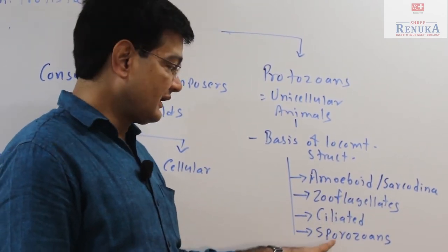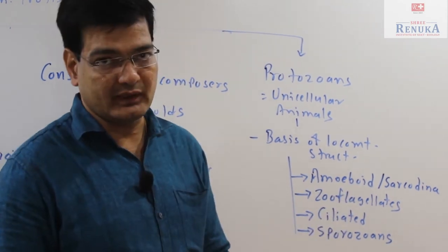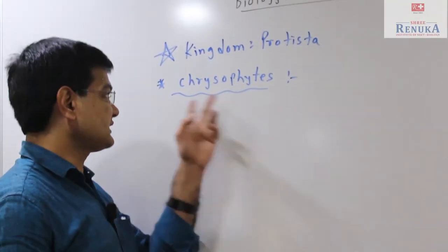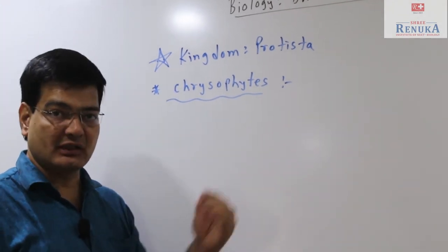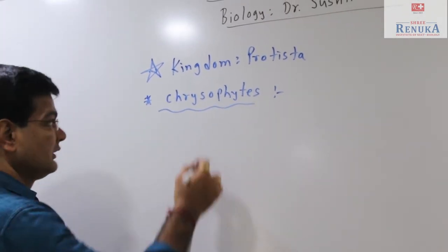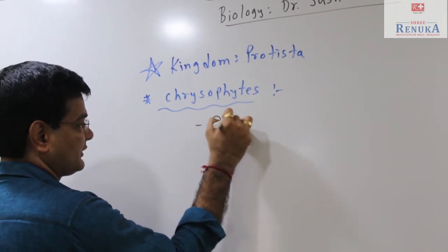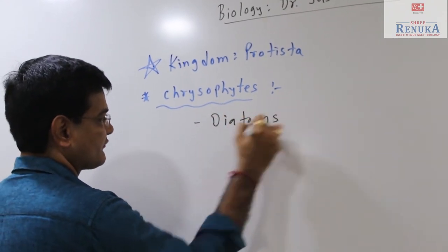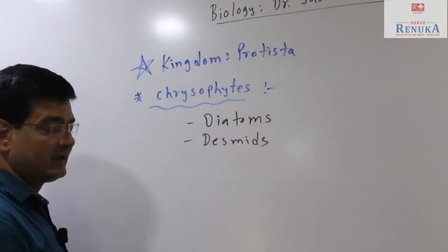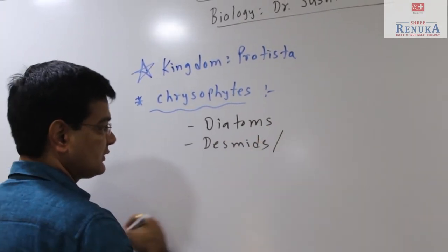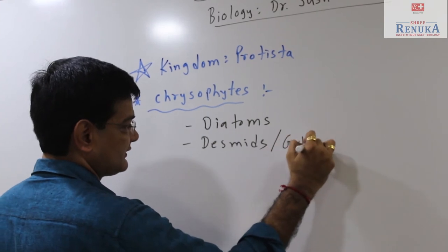In protista, we first talk about chrysophytes. These are photosynthetic protists. In chrysophytes, we talk about diatoms and desmids. Students, remember that desmids are also called golden algae.